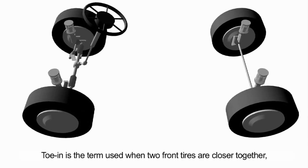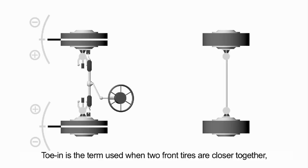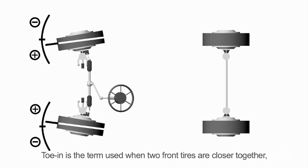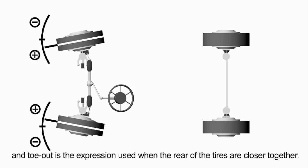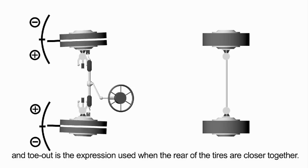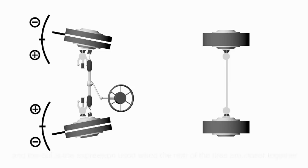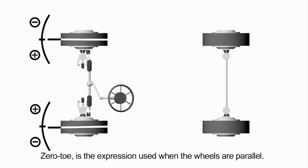Toe-in is the term used when the leading edge of the two front tires is closer together, and toe-out is the expression used when the trailing edge of the two front tires are closer together. Zero-toe is the expression used when the wheels are parallel.